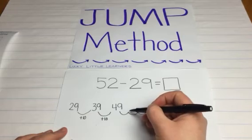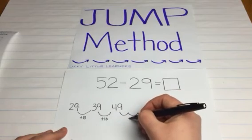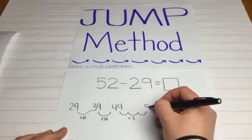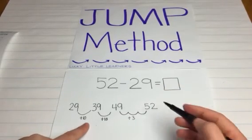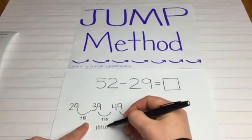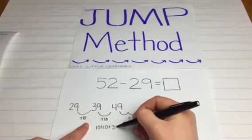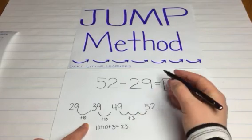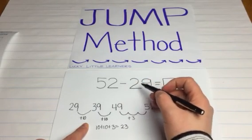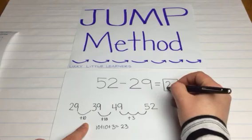We jumped 1, 2, 3. So plus 3 got us to our 52 number. So now we're going to take our 10 plus 10 plus 3. 10, 20, 23. So our answer when we take 52 minus 29 equals 23.